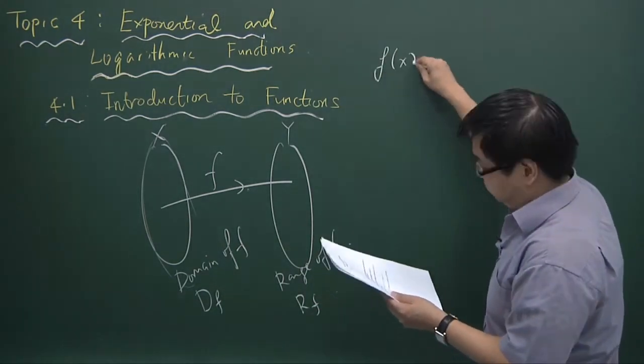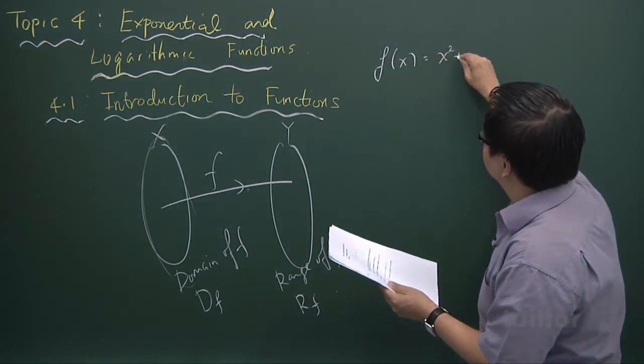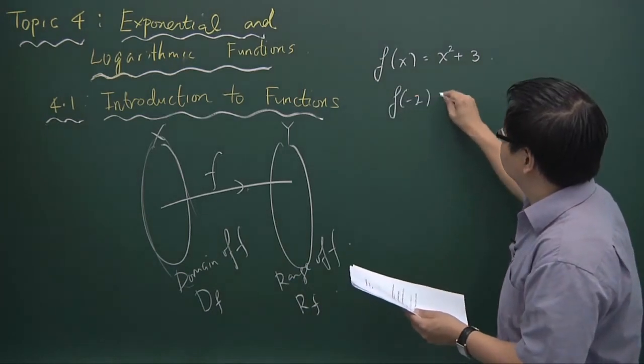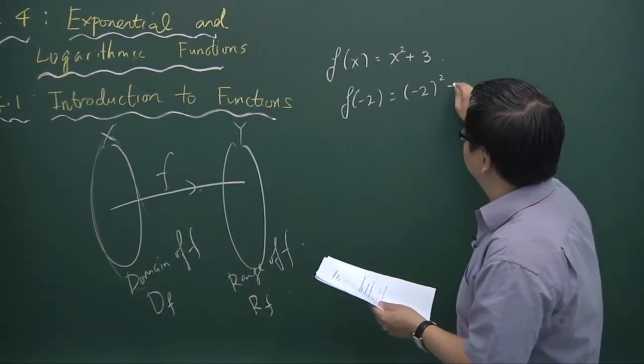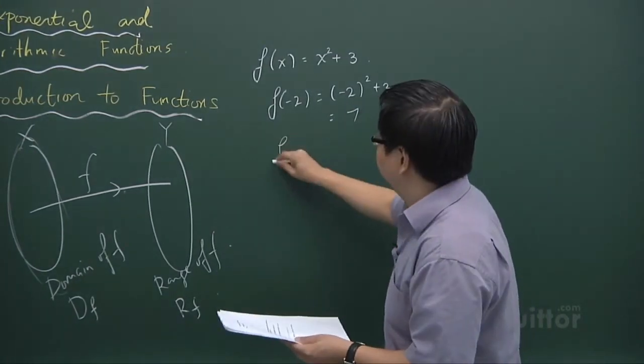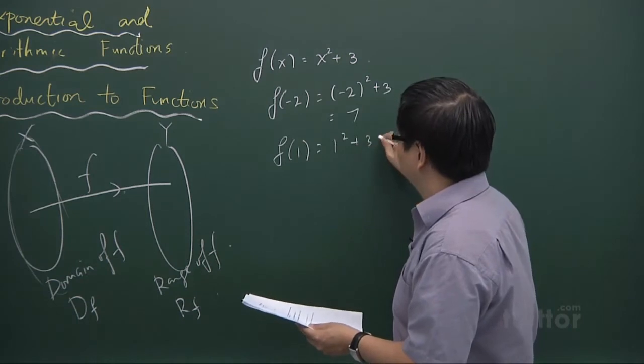For example, if you have f(x) equals to x squared plus 3, if you substitute minus 2 inside you get minus 2 squared plus 3, that gives you 7.